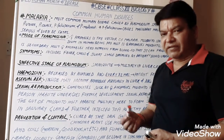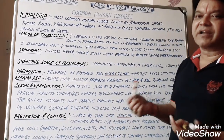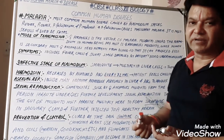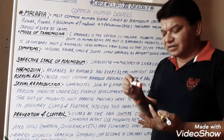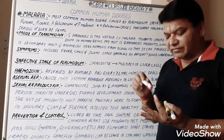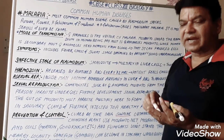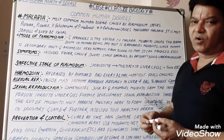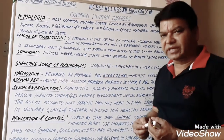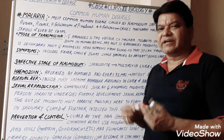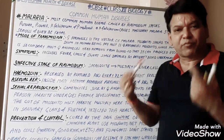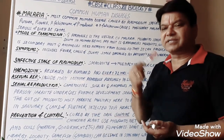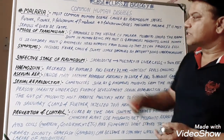The female Anopheles needs nutrients from blood so that it can produce eggs. The blood of human beings is very nutritive as it consists of digested proteins, fats, and carbohydrates. Now, symptoms.